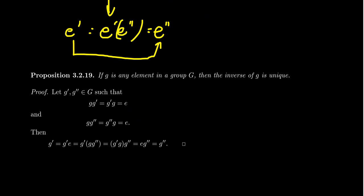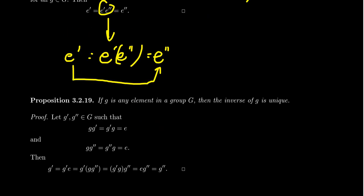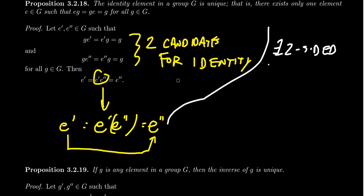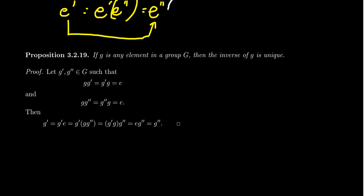We can do a similar thing for inverses. But going back to the proof of the identity, all we used was that we had a two-sided identity. We didn't even use the full-blown axioms of groups. So if there exists a two-sided identity, this is true for any type of algebraic object — if you have a two-sided identity, it is unique. Now, if you have only one-sided identities, things can get a little bit more funky, which is why we required in the axiom that the identity would be two-sided.